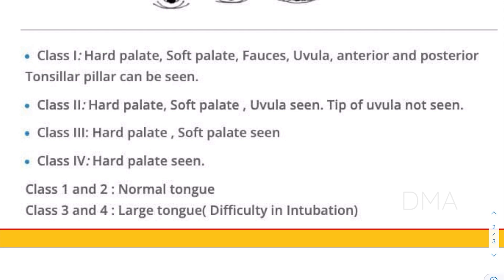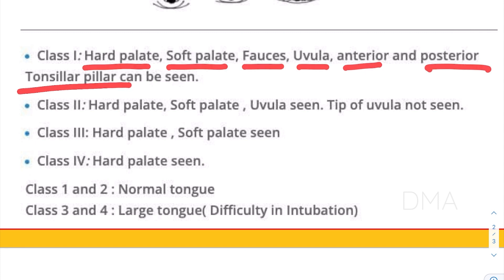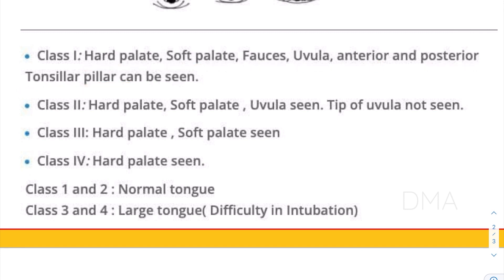In the case of class one, we are able to visualize the hard palate, soft palate, fauces, uvula, and anterior and posterior tonsillar pillars. If we are able to visualize all these structures, we give them a class one status.